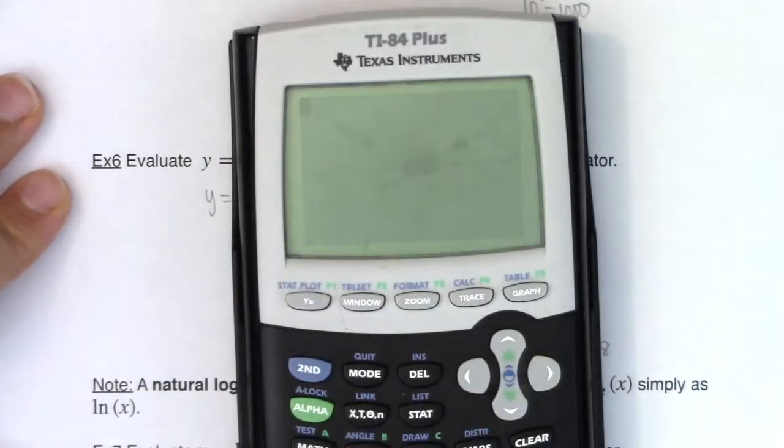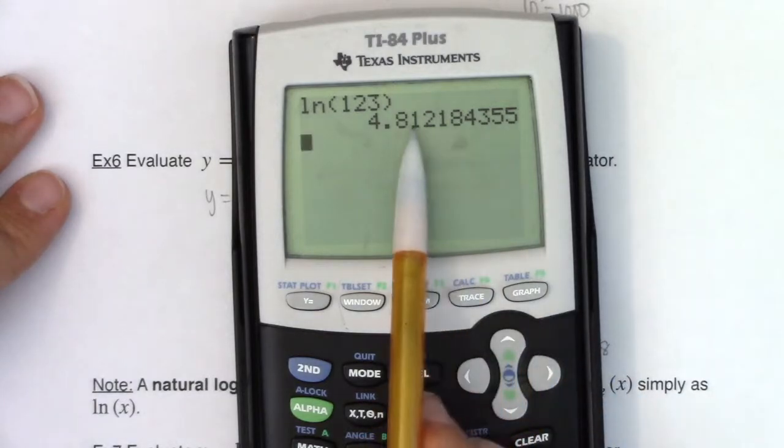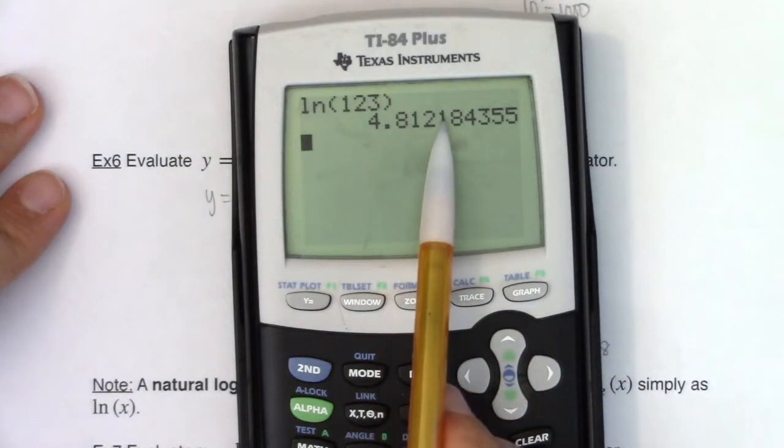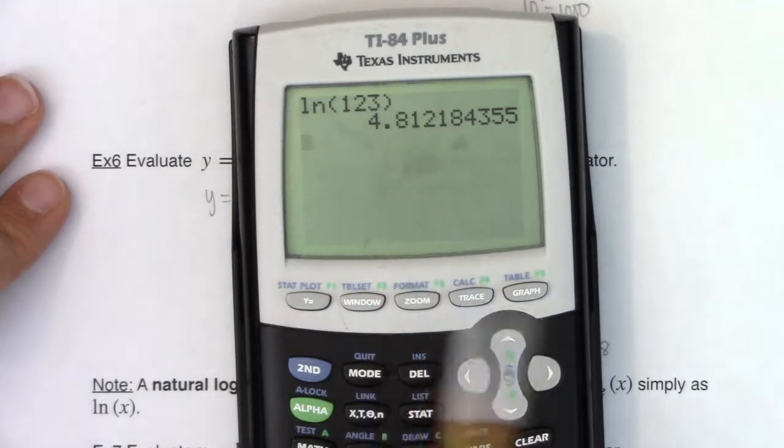But I'm going to hit the natural log button. So let's do natural log of 123. And what do we get? There it is. I need to go to four decimal places. One, two, three, four. When I look to the right, that's an eight. So I'm going to round that up to 4.8122.